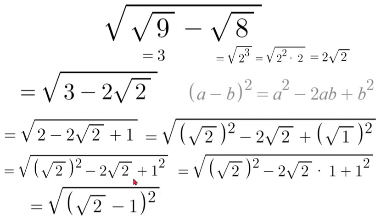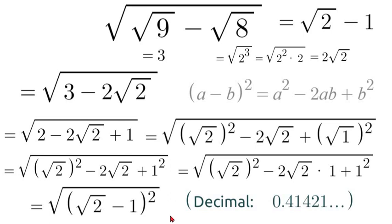So our two squares will cancel and we'll be left with square root of 2 minus 1, and if you want a decimal form that would be 0.41421 and it will keep on going.